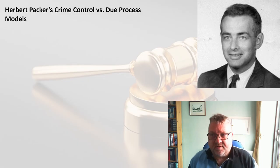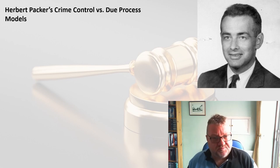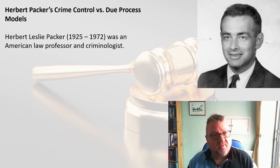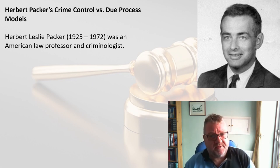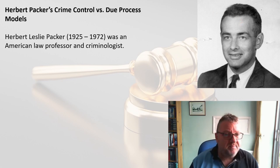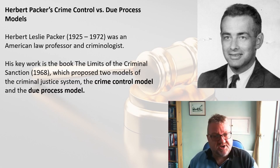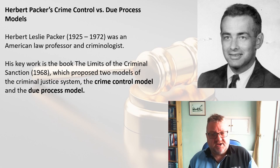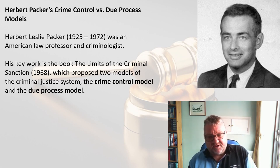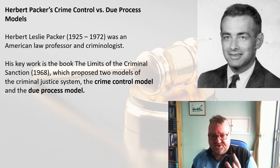The two theories are called crime control and due process, and they were put forward by Herbert Leslie Packer, an American law professor and criminologist. His key book was entitled The Limits of Criminal Sanction, published in 1968. In it, he proposed that there were two models of the criminal justice system, and wherever you went in the world, you could see these two models in some shape or form.